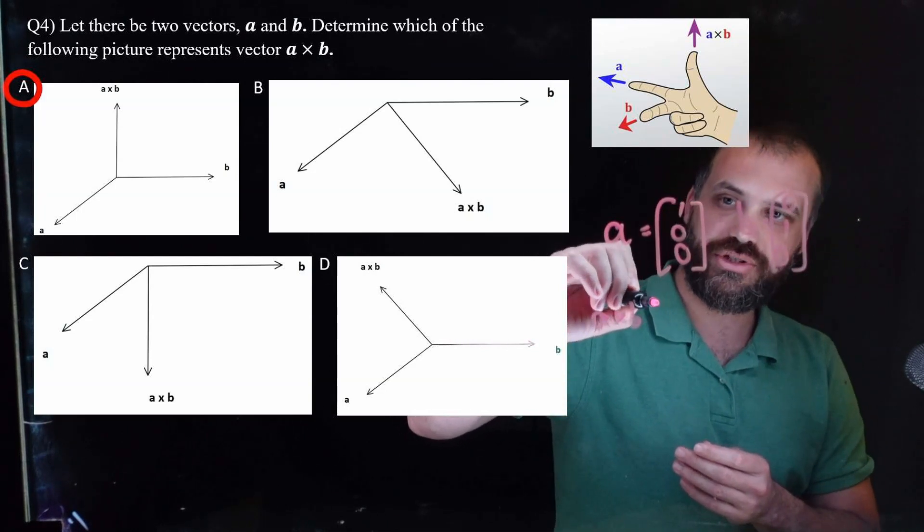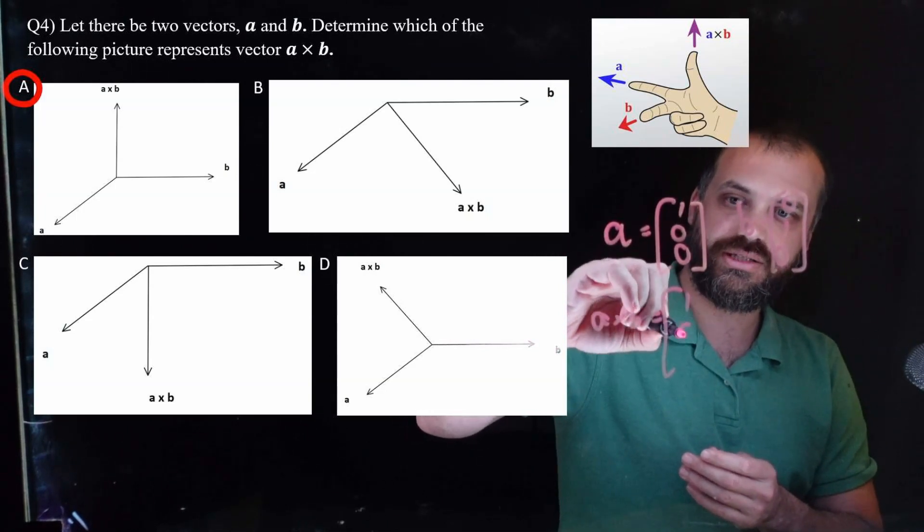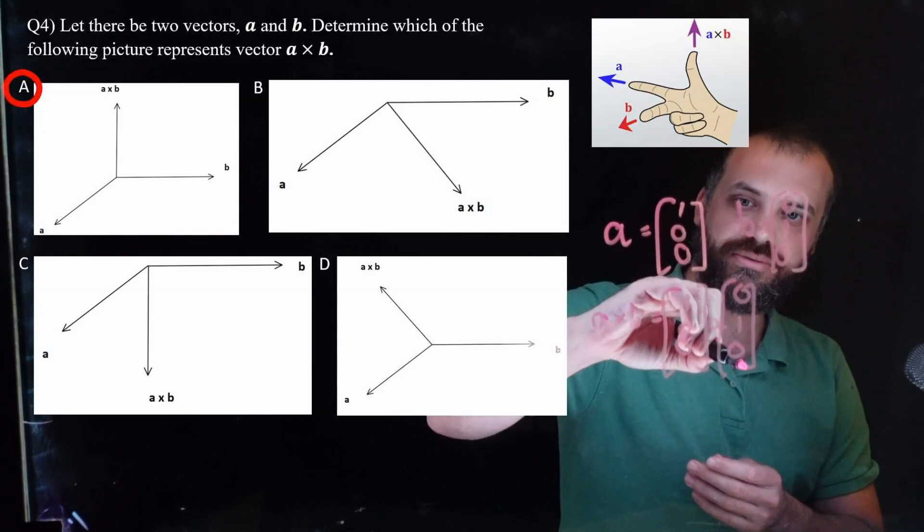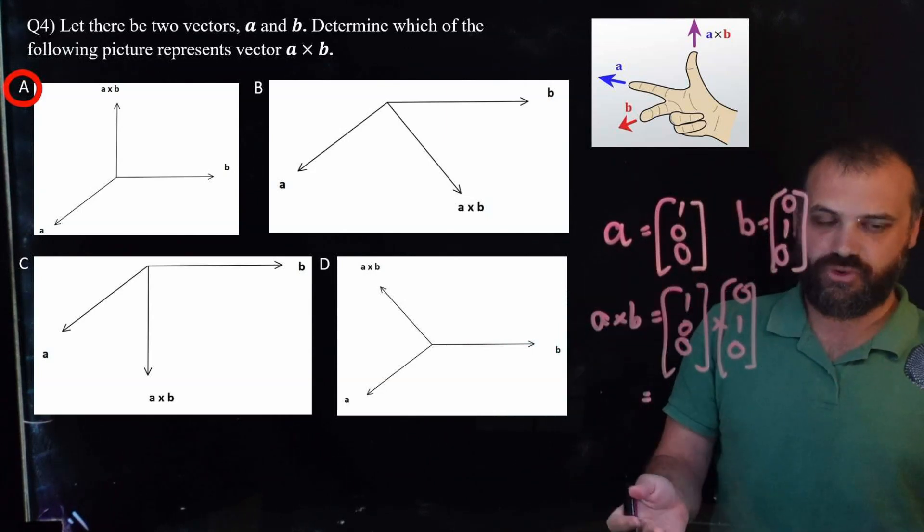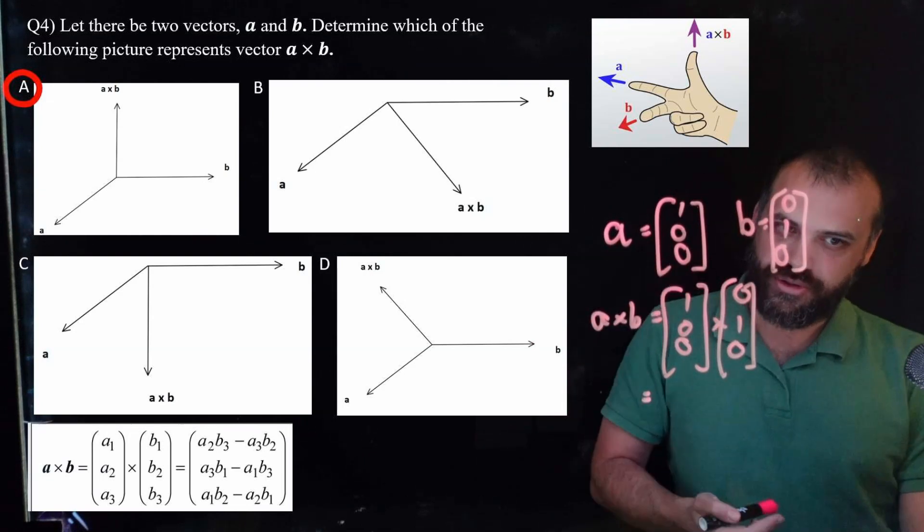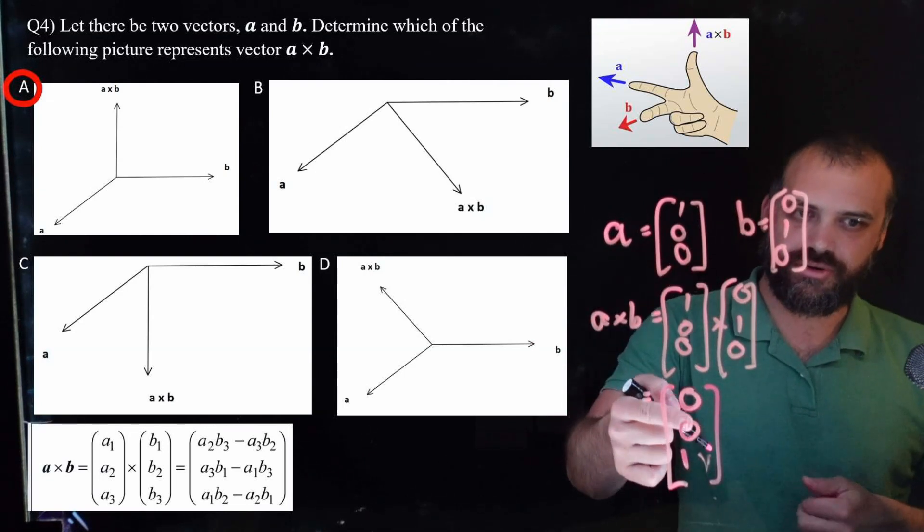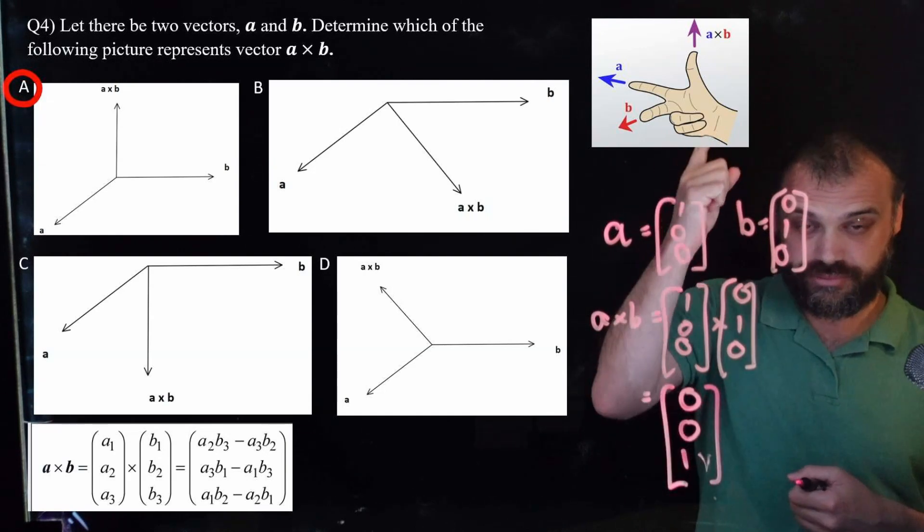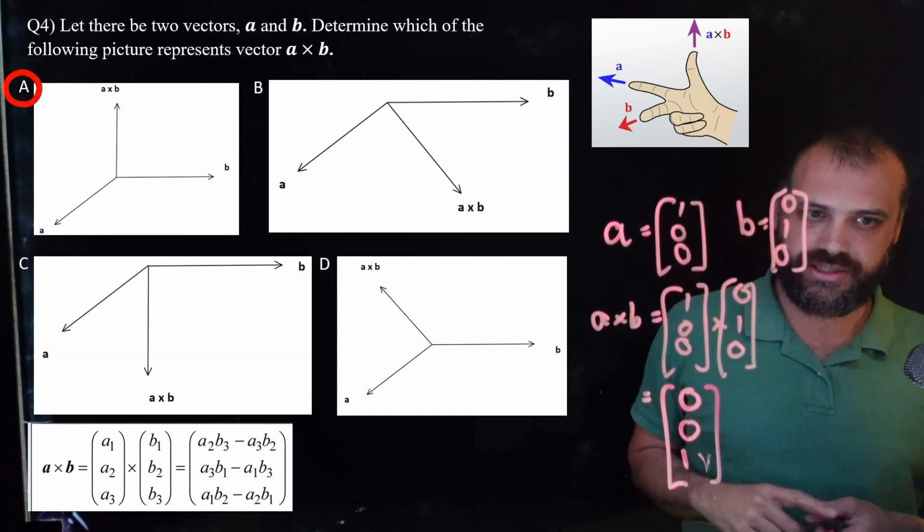And similarly, we can say vector B is just one in the J direction. So, B is equal to 0, 1, 0. Now, if we do that cross product, 1, 0, 0 times 0, 1, 0, and you can use your formula sheet to do that, when you do that, you'll get an answer of 0, 0, 1, which is 1 in the direction straight up, which is our answer there, A.